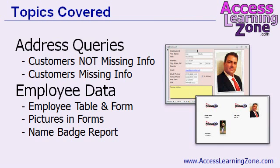Then we're going to add employee data to our database. We'll start with an employee table — it'll be pretty similar to the customer table we built before, but you'll see some new data types on there. We'll build an employee form. I'll show you how to put pictures in your forms so you can display them on the form and on a printable report. We'll make a name badge report where we can make name badges for all of our employees with their picture, name, title, and a company logo.